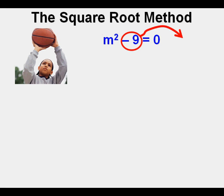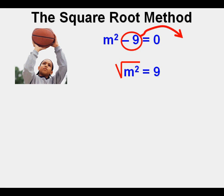The first thing Joe will do is take that minus 9 over to the right side of the equal sign — over here on the right side, it becomes positive 9. Now we need to get rid of the squared sign to isolate the unknown. We take the square root of the squared symbol to cancel it, and following the golden rule of algebra, we do the same thing on the right side. Now we have m by itself; we just need to figure the square root of 9.